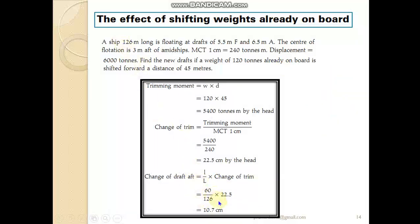Substituting into the formula: 60 ÷ 126 × 22.5 = 10.7 centimeters. This is the change of draft aft.